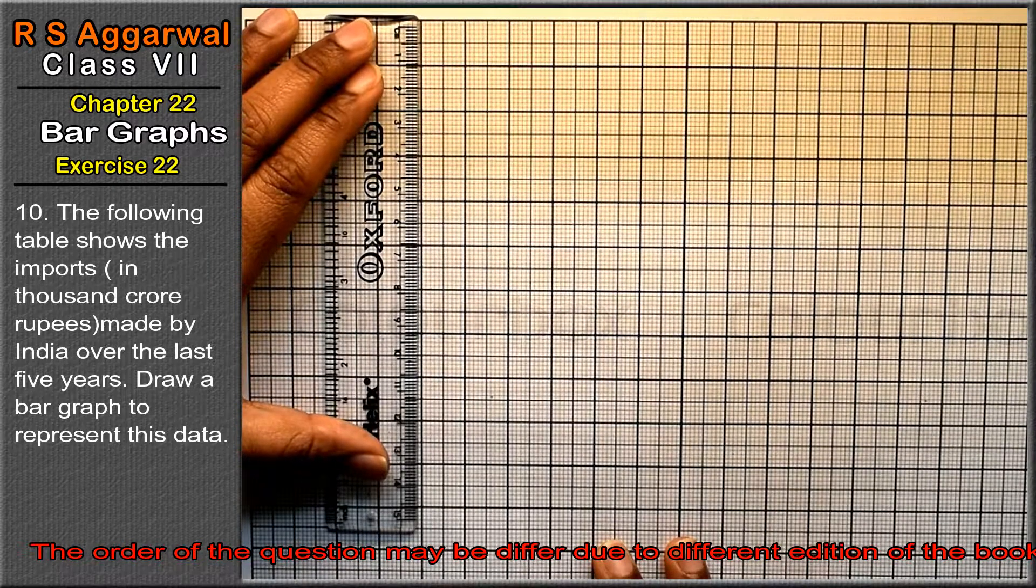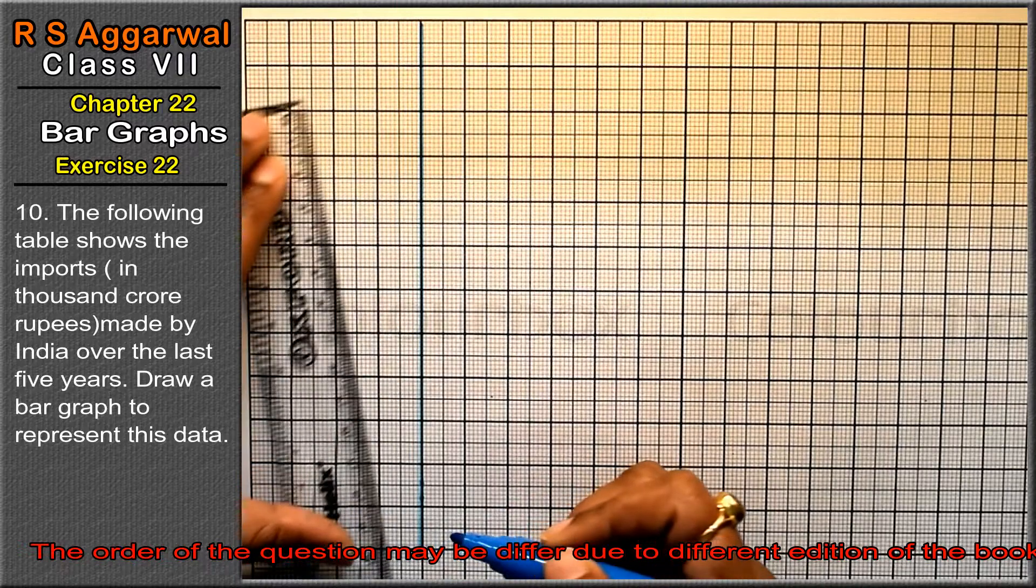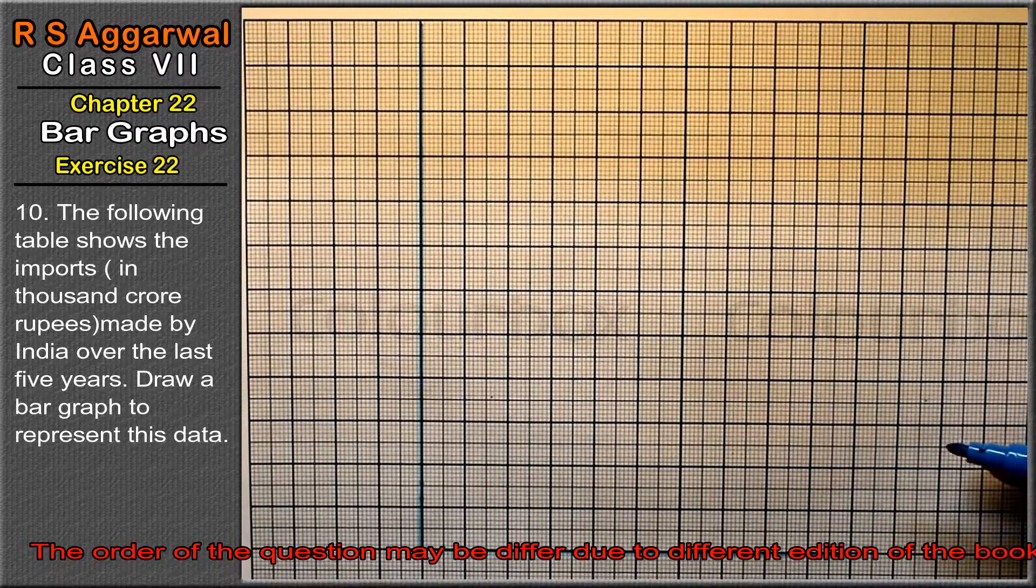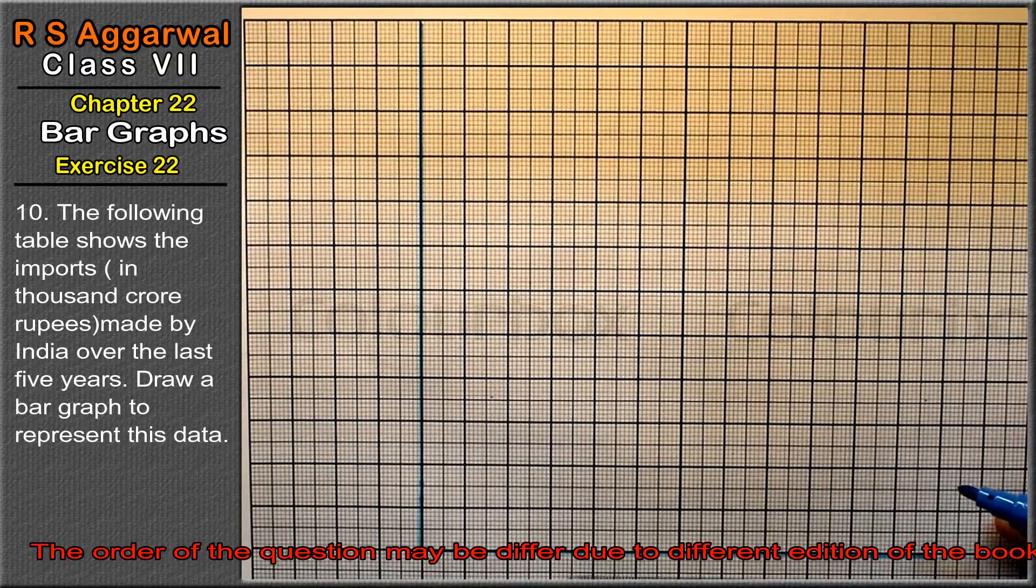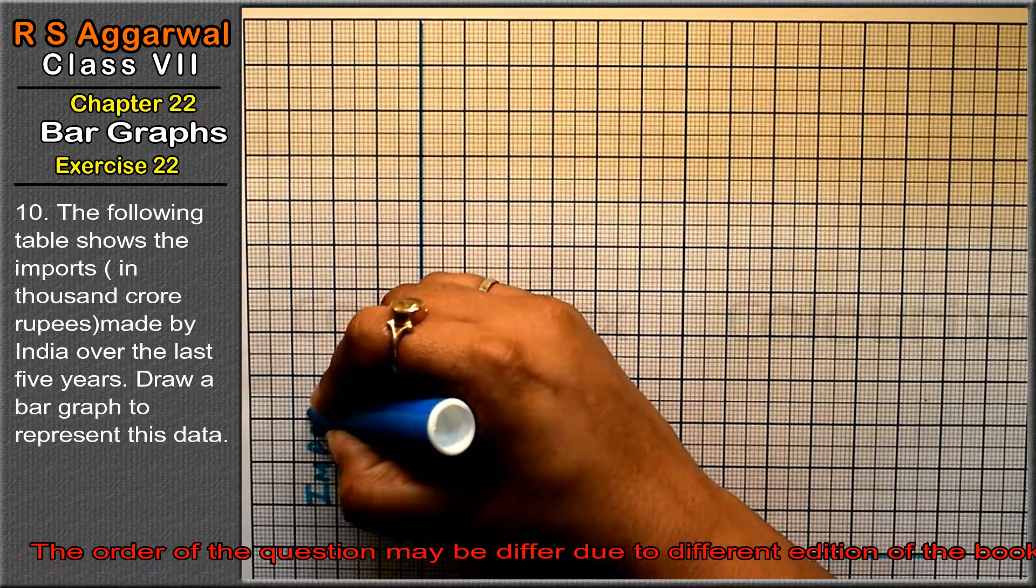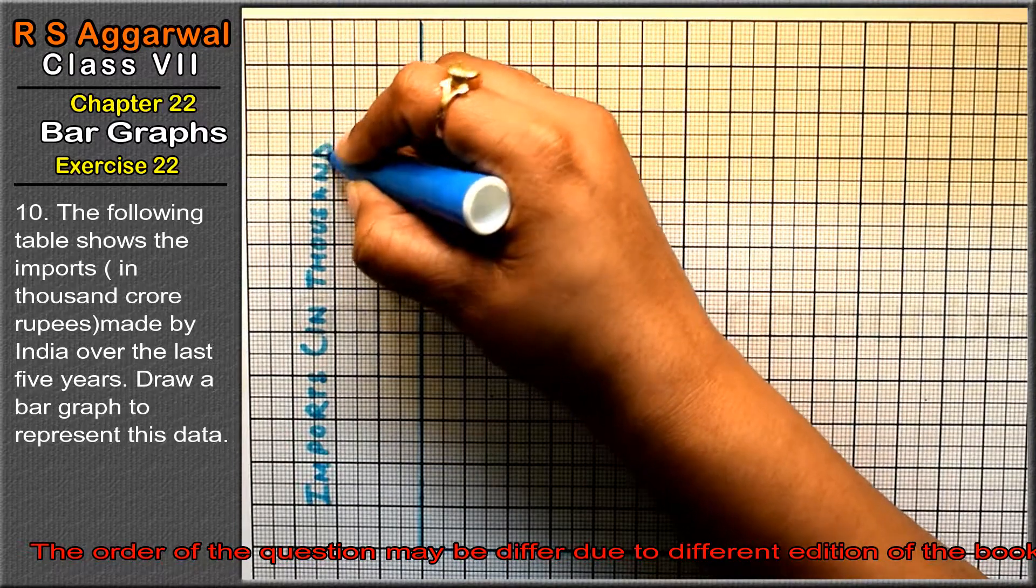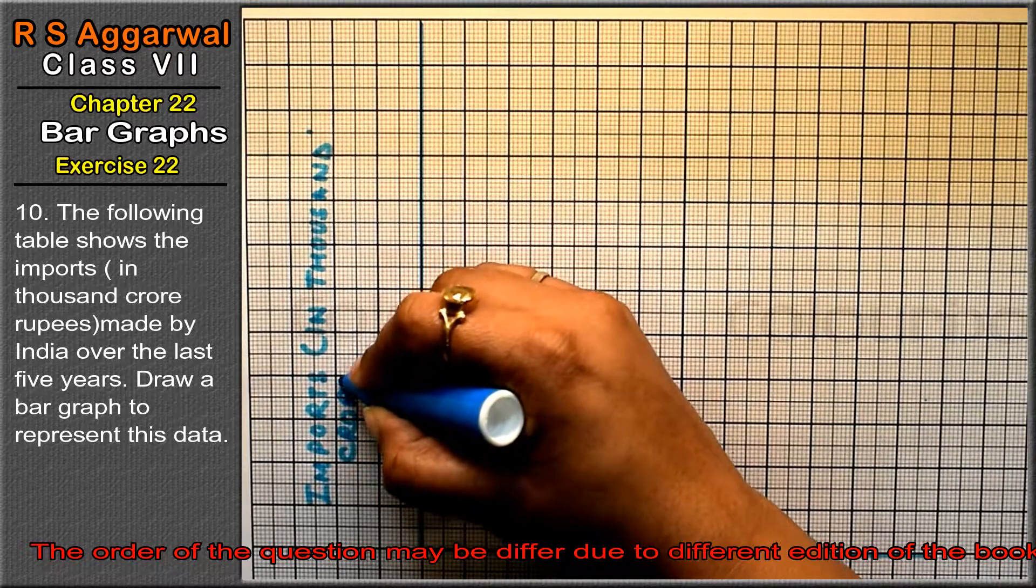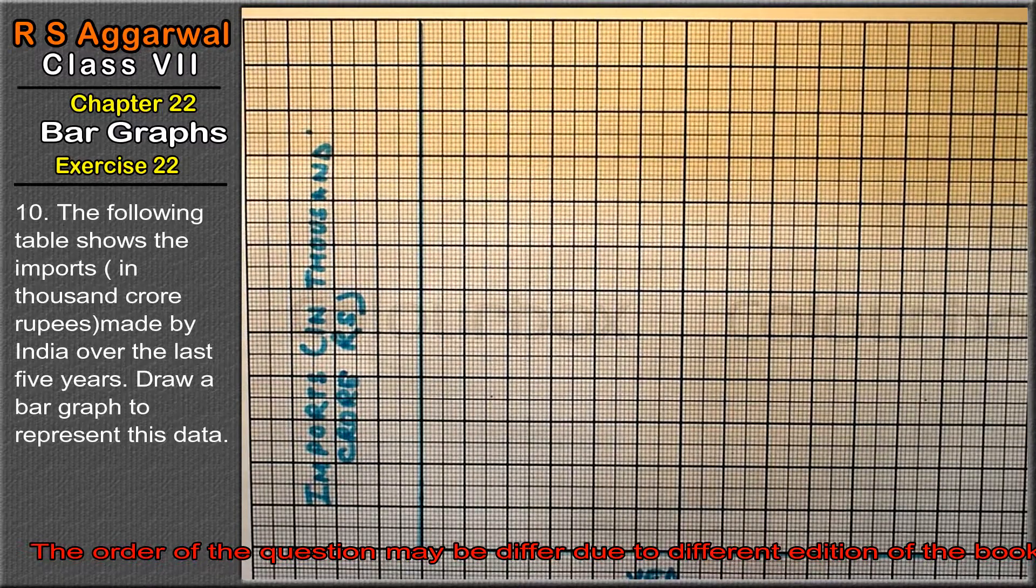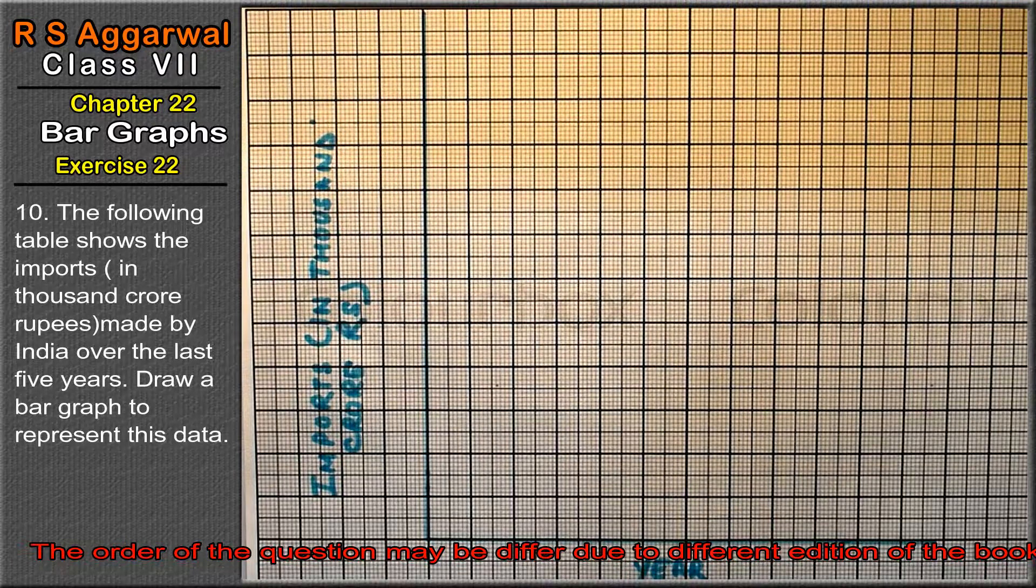Let's make the bar graph. I'm drawing the axes. On the y-axis we write 'Imports in thousand crore rupees', and on the x-axis we write 'Year'.